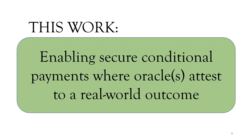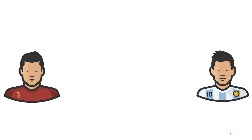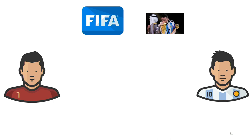What we want is a protocol for secure conditional payments, where an oracle — which I'll introduce — can attest to some real-world outcome. In our case, this would be announcing that Argentina won the World Cup. So our setting has Ronaldo and Messi as the two mutually distrusting parties, and an oracle which I'll represent as FIFA, who announces that Argentina has won.